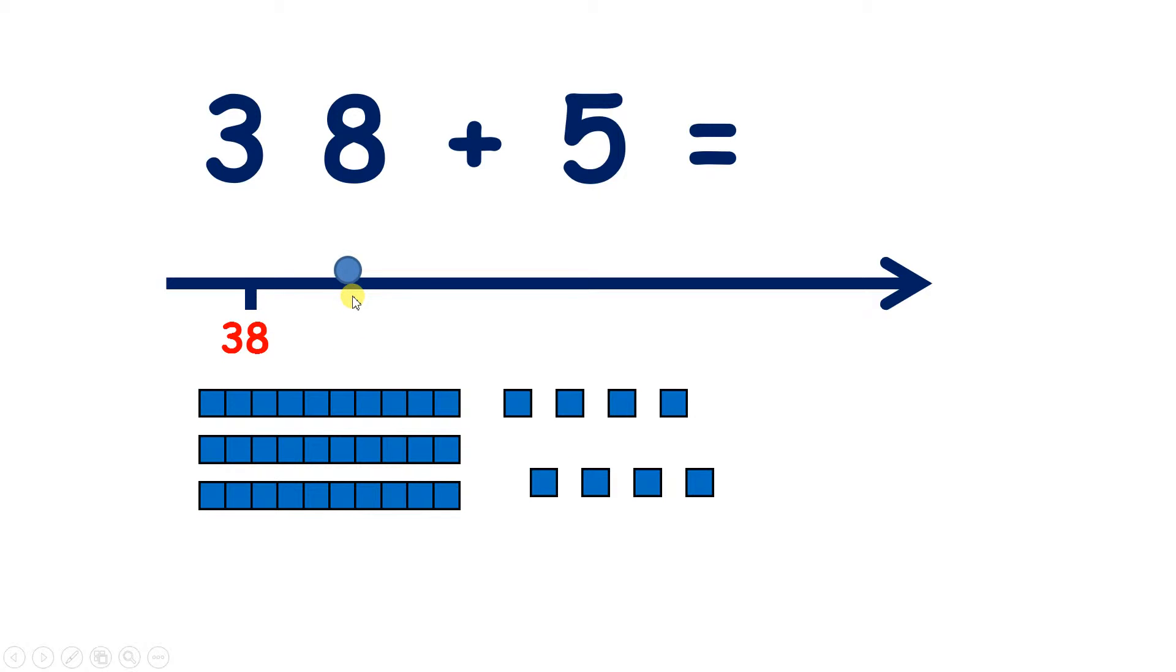Now if we add one more, we'll have one more unit, so we'll have 39. Add another, so that we're now adding 2 to 38, and we now have 10 units. So what should we do with those 10 units? We can push those 10 units together to make a line of 10. So we now have 4 lines of 10, so we have 40.